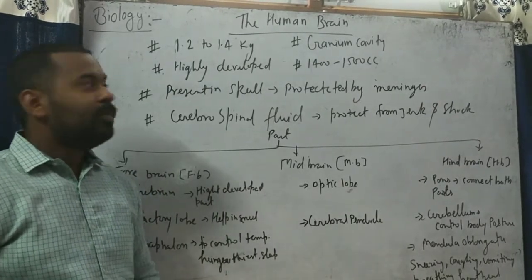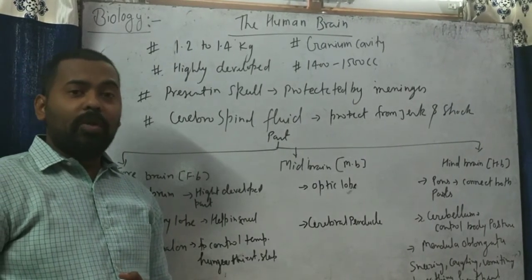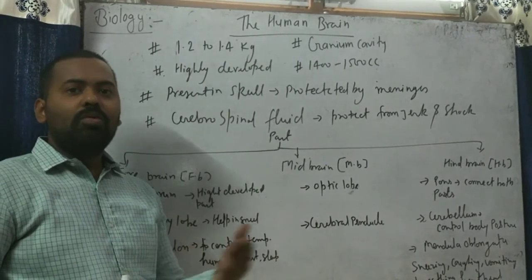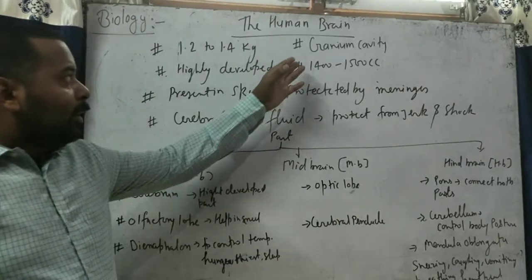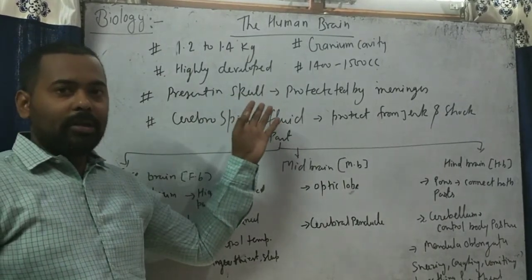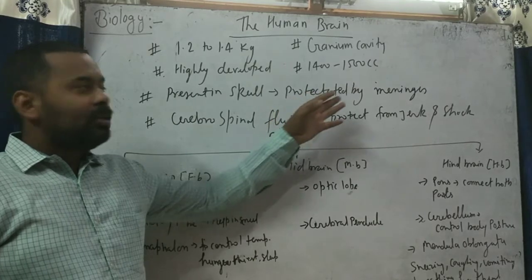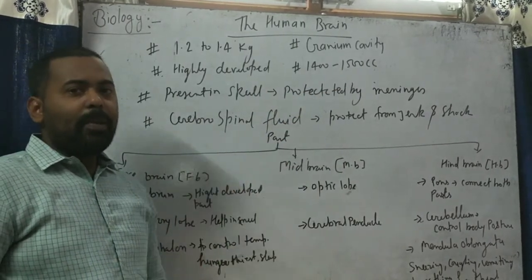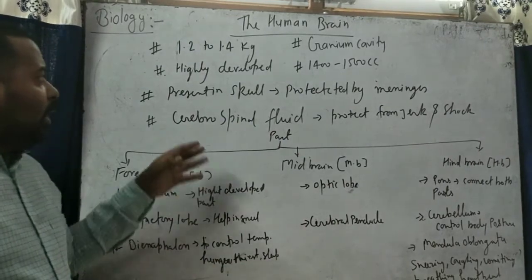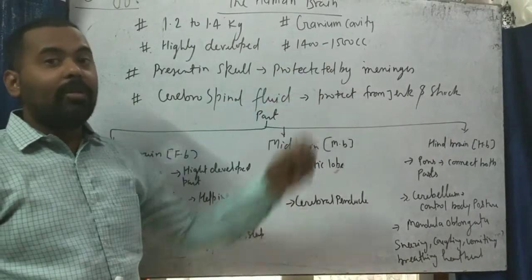In the central nervous system, the first part is the human brain — a highly developed organ present in the human body. Its weight is about 1.2 to 1.4 kg (1,200 to 1,400 grams). It is present in the cranial cavity, also called the skull. Inside the skull, the brain is protected by three layers named meninges. Inside the meninges, cerebrospinal fluid is present, which protects the brain from jerks and shocks. The cranial capacity of the brain is 1,400 to 1,500 cc.